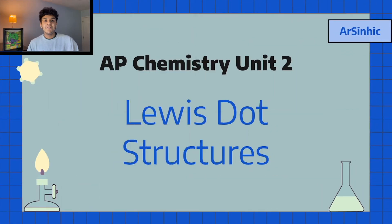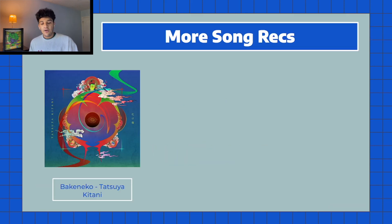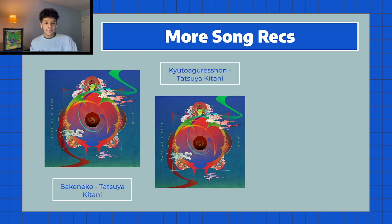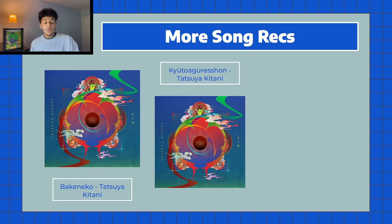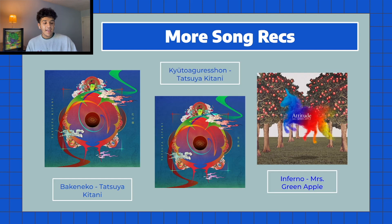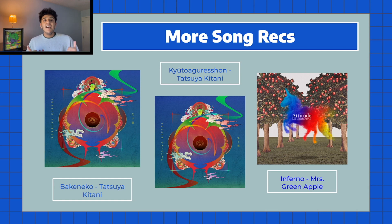We're going to start today's video with our J-pop song recs, which are Bakenoko by Tatsuya Kitani, Kyuto Gudesho by Tatsuya Kitani again, and Inferno by Mrs. Greenapple. I might have butchered the second song and I apologize for that, but these are really good songs and if you give them a listen and like them, let me know in the comments.